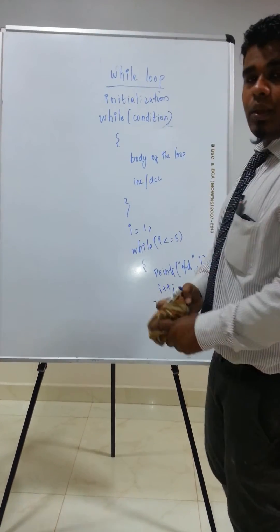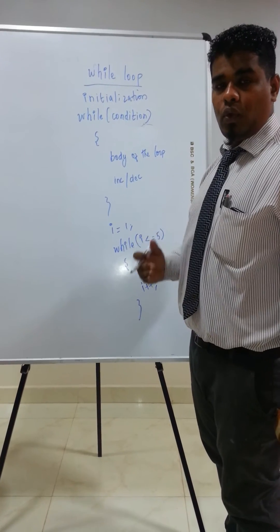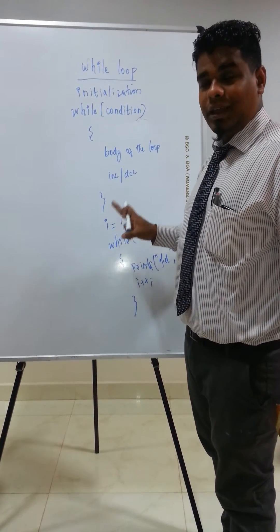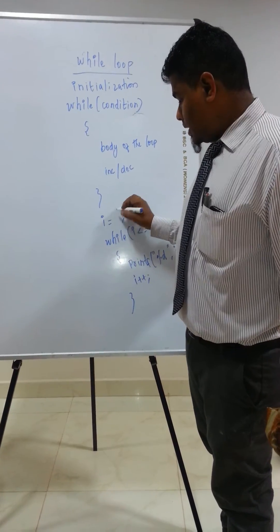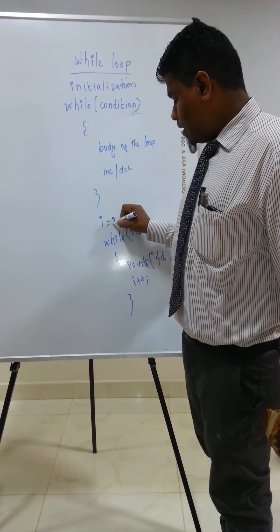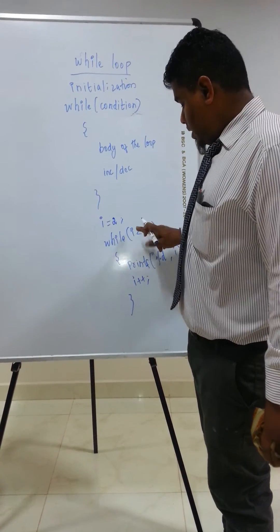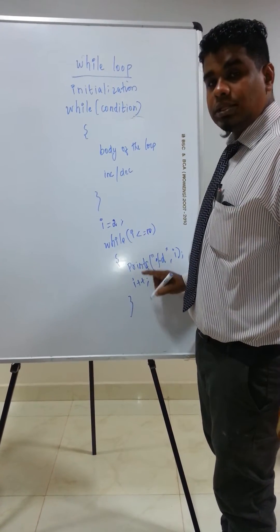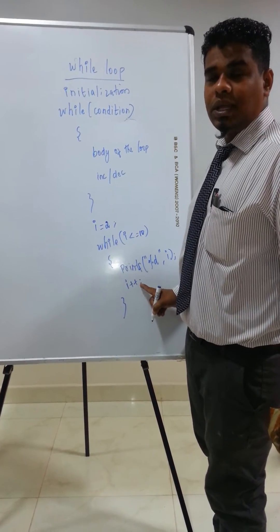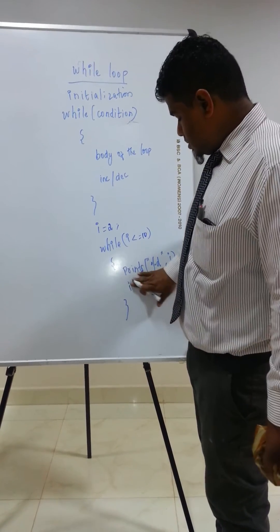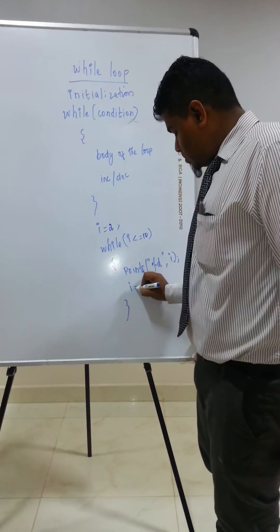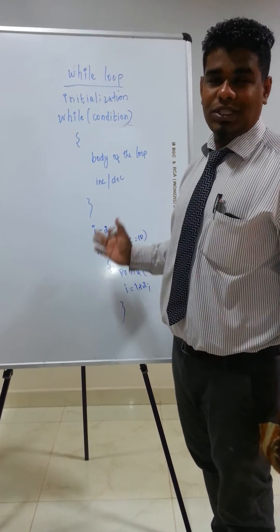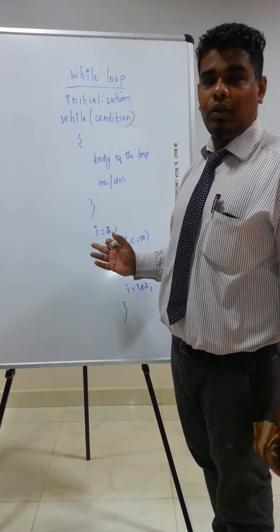If I want to print the values 2, 4, 6, 8, 10 using the while loop, as I told you earlier, I need to assign i = 2, then the condition i <= 10, and instead of i++, I need to use i = i + 2. This is the concept of the while loop.